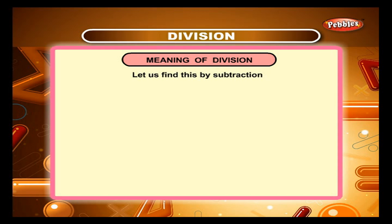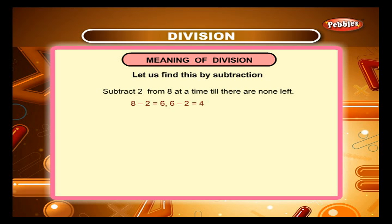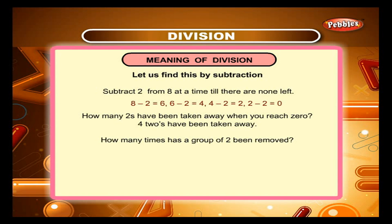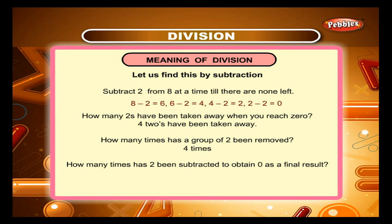Let us find this by subtraction. Subtract 2 from 8 at a time till there are none left. 8 minus 2 is equal to 6. 6 minus 2 is equal to 4. 4 minus 2 is equal to 2. 2 minus 2 is equal to 0. How many 2's have been taken away when you reach 0? 4 twos have been taken away. How many times has a group of 2 been removed? 4 times. How many times has 2 been subtracted to obtain 0? 4 times.